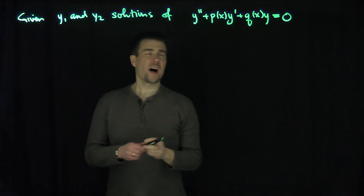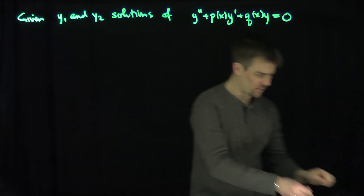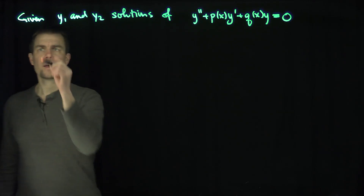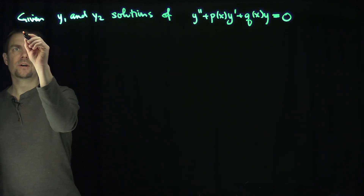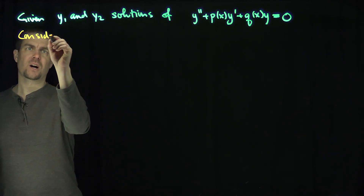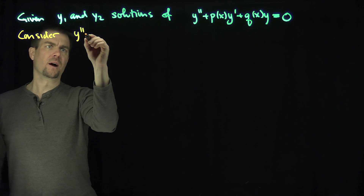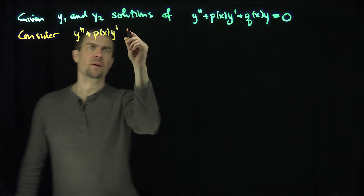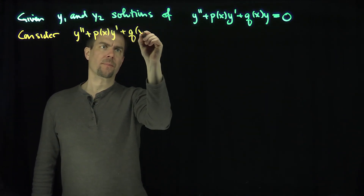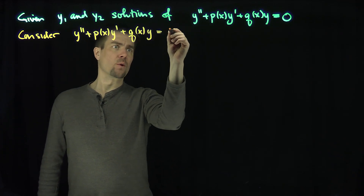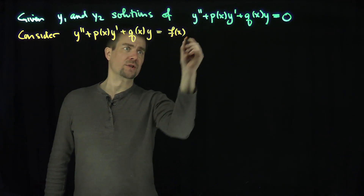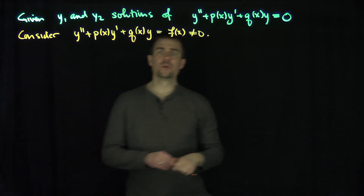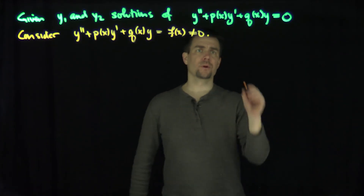We'd like to solve the non-homogeneous problem. We have two solutions of the homogeneous problem, and now consider the non-homogeneous problem: y double prime plus p of x times y prime plus q of x times y equals a function f of x, which is not equal to zero. We know what to do — we can use variation of parameters.